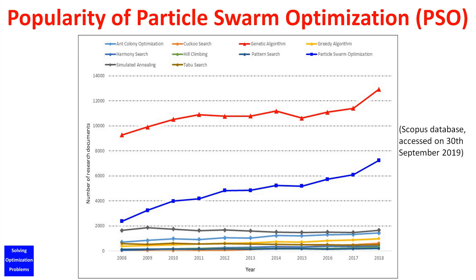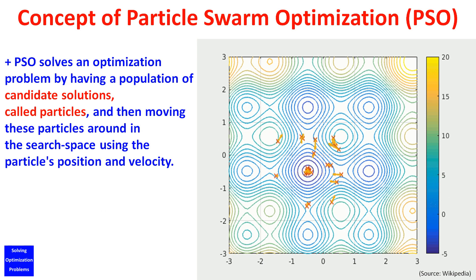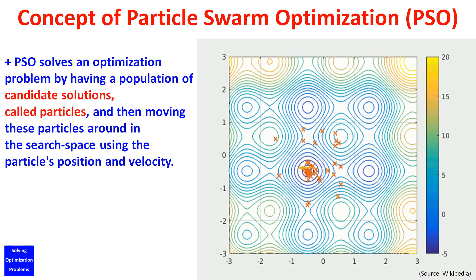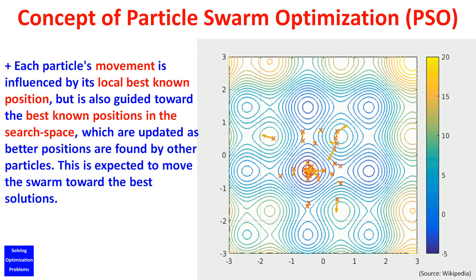Let's have a look at this data from Scopus. Particle swarm optimization solves an optimization problem by having a population of candidate solutions, called particles, and then moving these particles around in the search space using the particle's position and velocity. Each particle's movement is influenced by its local best-known position, but is also guided toward the best-known positions in the search space, which are updated as better positions are found by other particles. This is expected to move the swarm toward the best solutions.